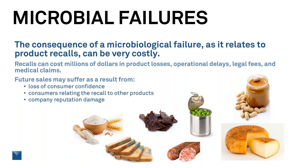Future sales may suffer from loss of consumer confidence, or consumers could relate that failure to other products you have, even though they were unrelated. I have some pictures here showing current product recalls. In January, Gold Medal bleached flour was contaminated with salmonella. In April, organic peanut butter for listeria. In May, raw milk cheese for listeria, and Aurora Packing Company had an issue with E. coli in their meats. And July of last year, Kraft Heinz had a cheese dip that had botulism.